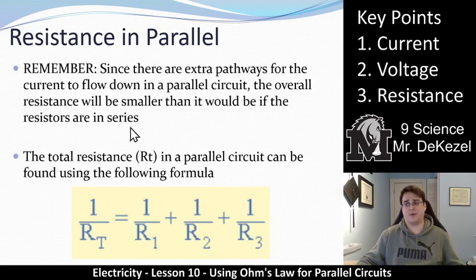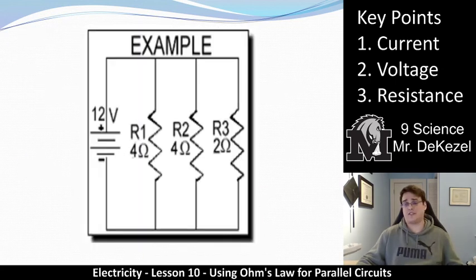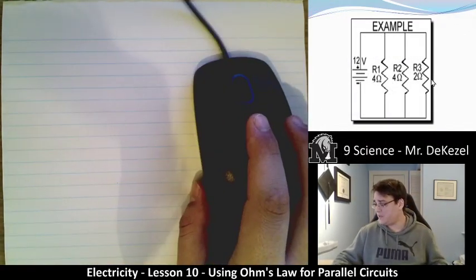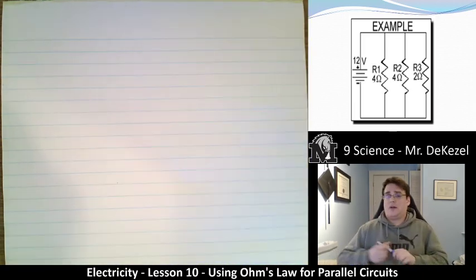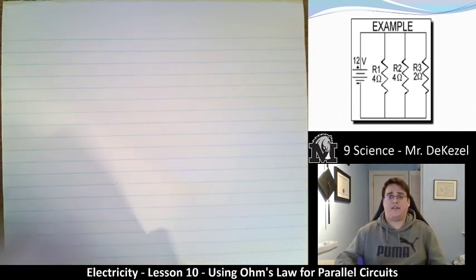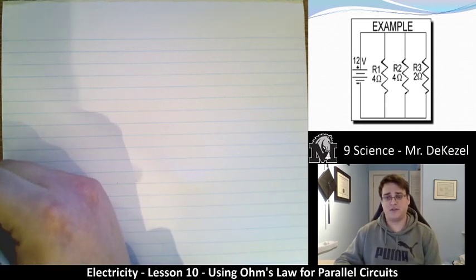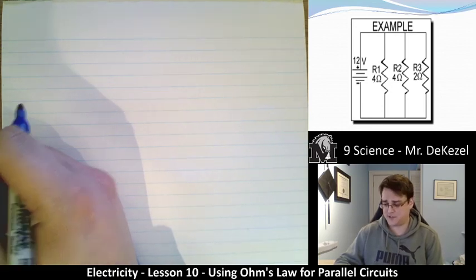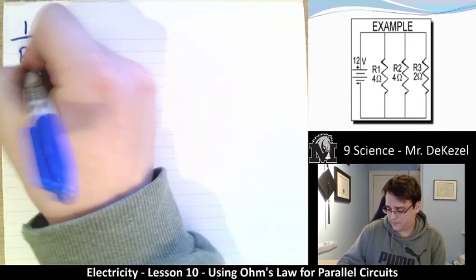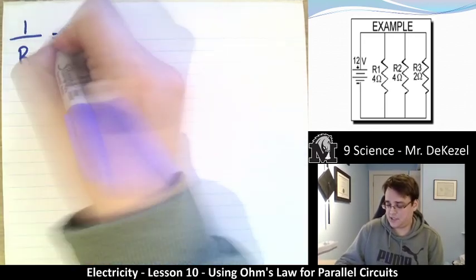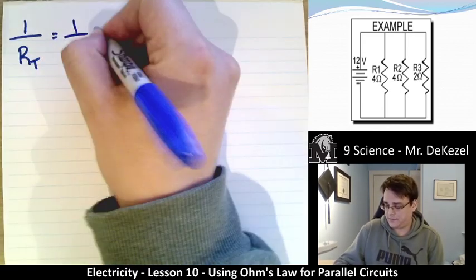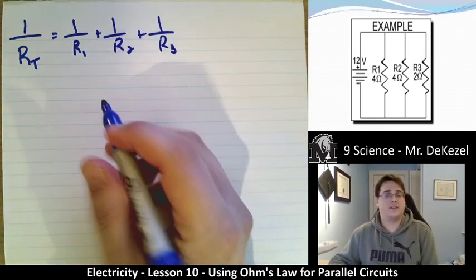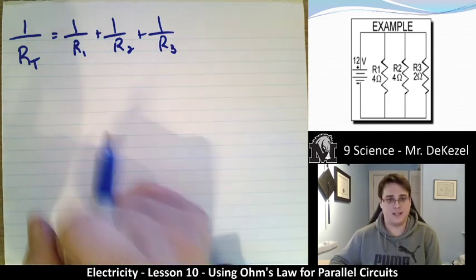I'm going to do some examples — do not worry. First example: we have this parallel circuit with resistance 1, resistance 2, and resistance 3. We're going to find the total resistance. Our equation is: 1 over the total resistance is equal to 1 over R1, plus 1 over R2, plus 1 over R3. Hopefully this will make some sense as we go along.